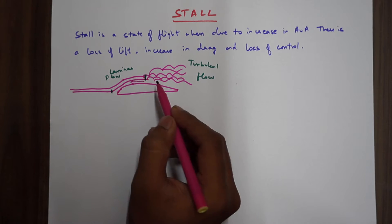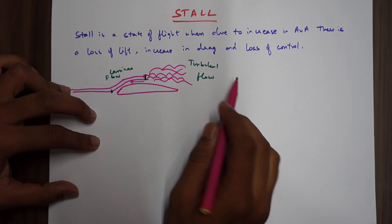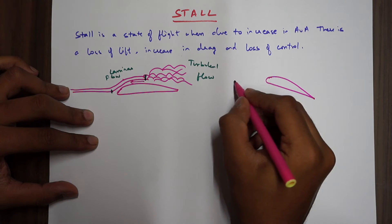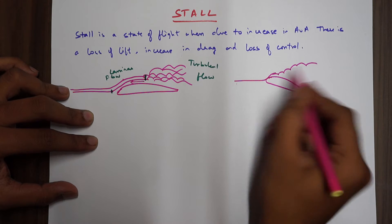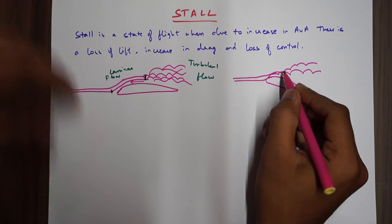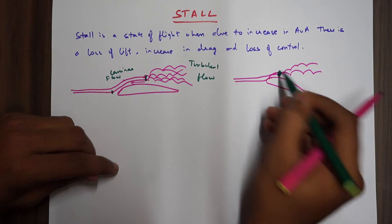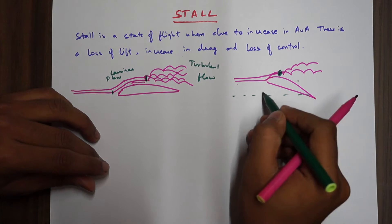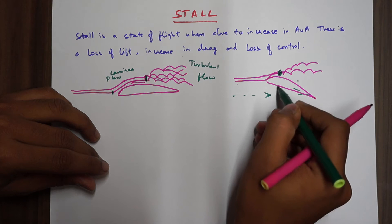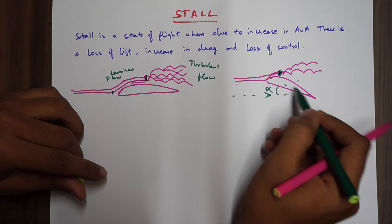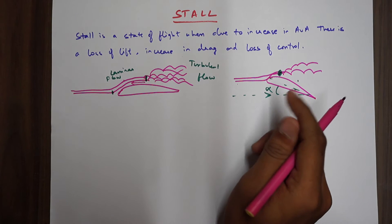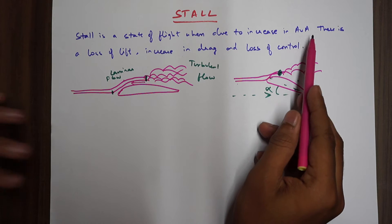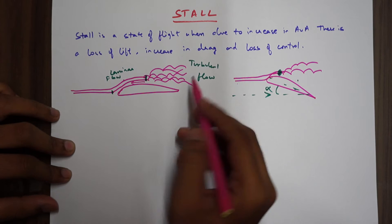Now, what happens in a stall with increasing angle of attack is that this transition point moves forward. When the angle of attack increases, the relative airflow changes, the transition point moves forward, and this results in a stall — with loss of lift and increase in drag.